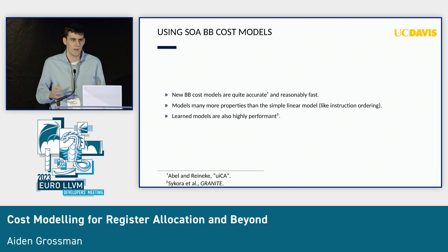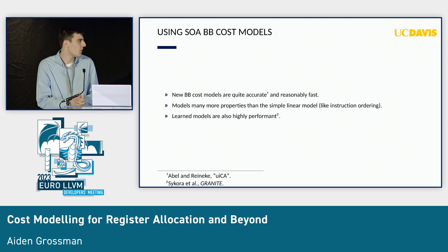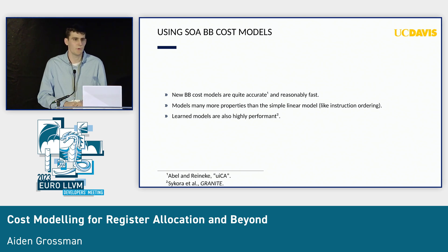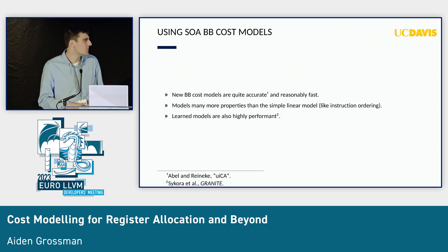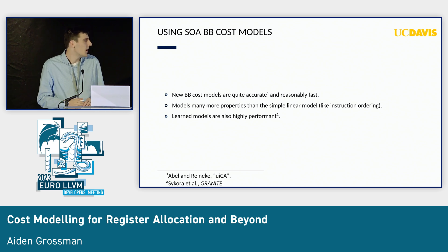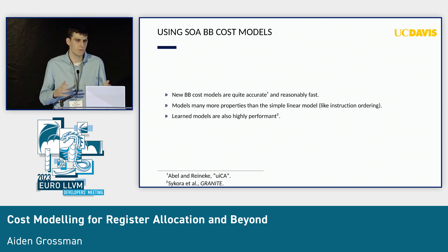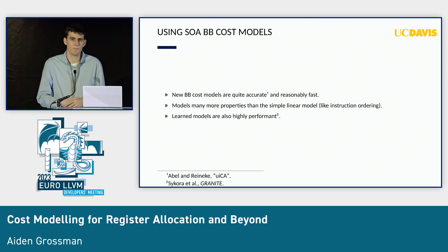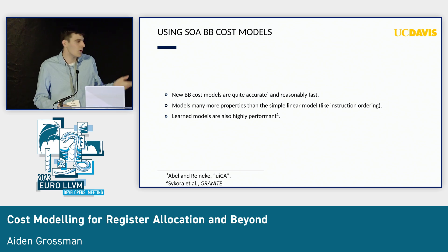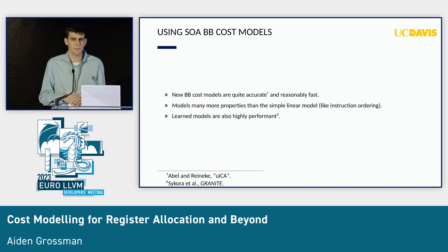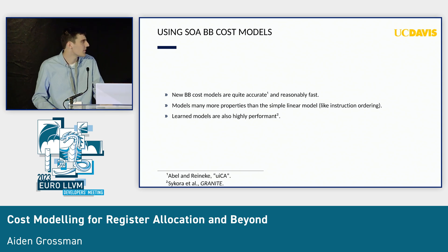To work on improving this, we tested new state-of-the-art basic block cost models. They're pretty accurate — UECA, which is the one I used, gets to within about one to two percent accuracy in terms of latency assuming ideal execution conditions. There's LLVMCA too, but it's not as accurate. They're also reasonably fast. These models a lot more conditions of execution that you'll see in modern pipelined superscalar out-of-order CPUs. Learned cost models in this specific area are also pretty performant.